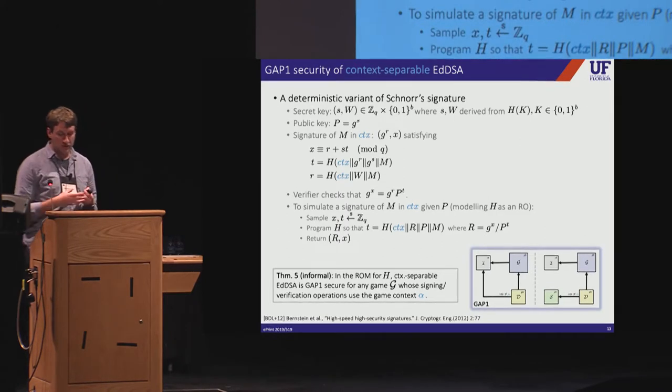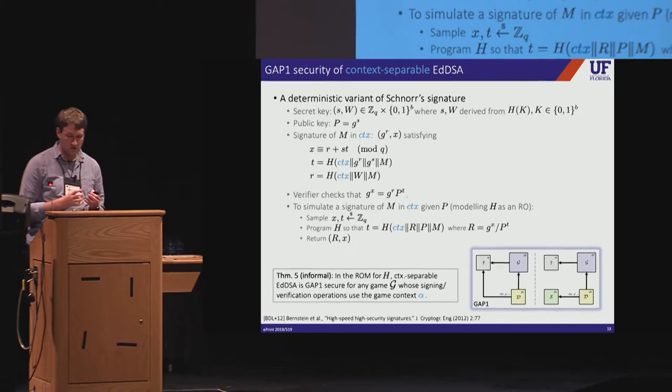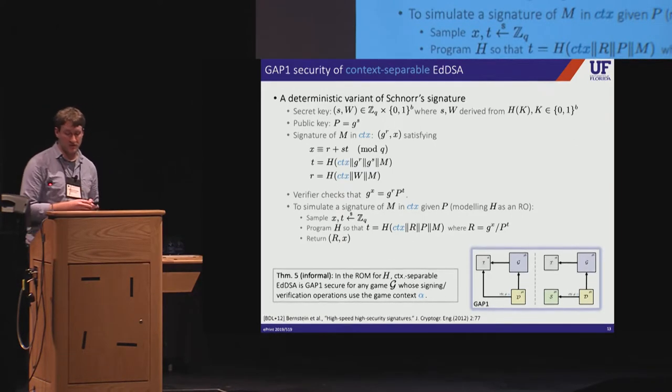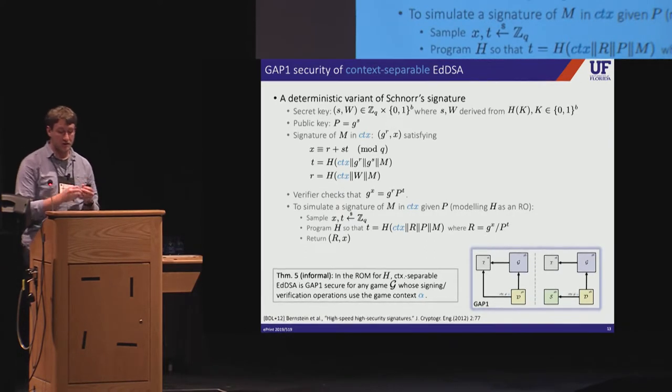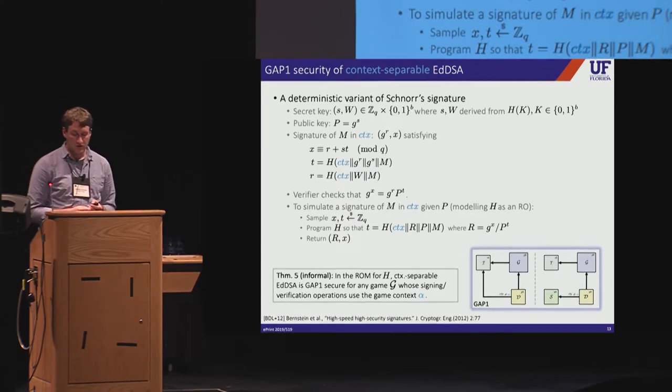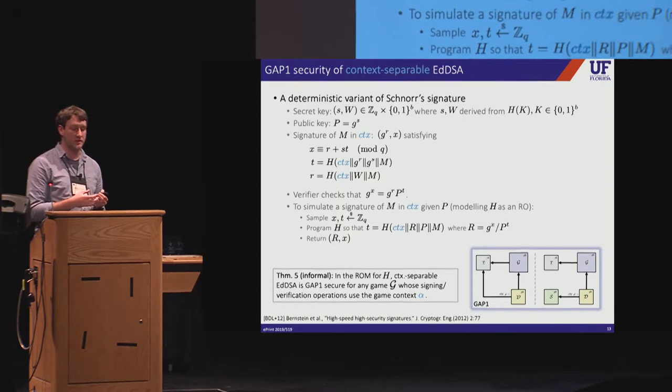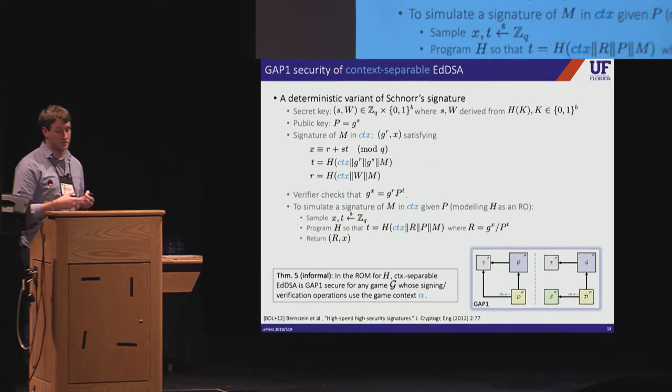Returning to EDDSA, we prove that the context separable variants of this signature algorithm are secure for any game whose signing and verification operations always use the game context. This generality is the key advantage of context separability. Our theorem precisely specifies conditions for applications under which enforcing context separation is sufficient to rule out exposed interface attacks. So besides context separability, what we need to prove GAP1 security is a way to efficiently simulate signatures output by the interface using only the public key. And in fact, there's a well-known technique for doing just that when we model the hash function as a random oracle, but I'll leave the details to the paper.